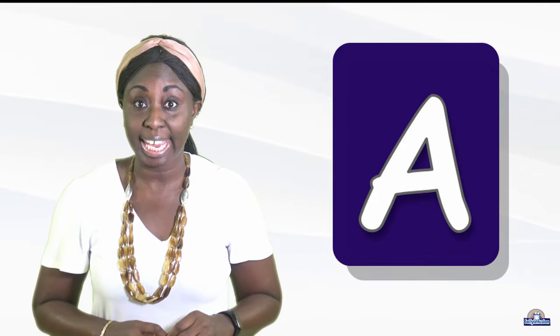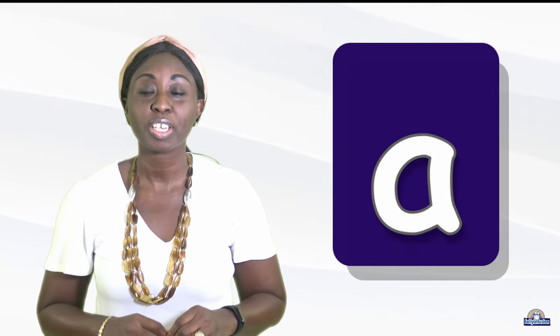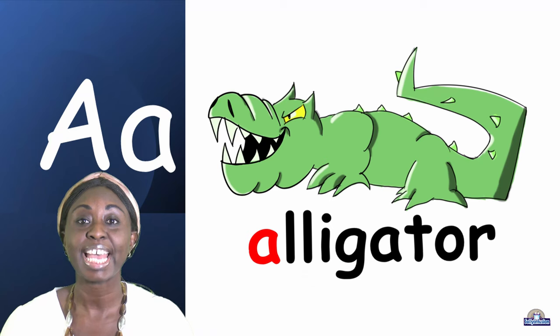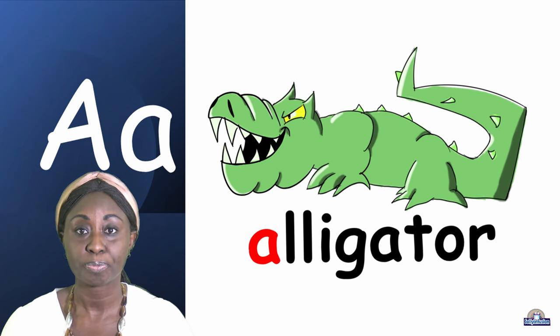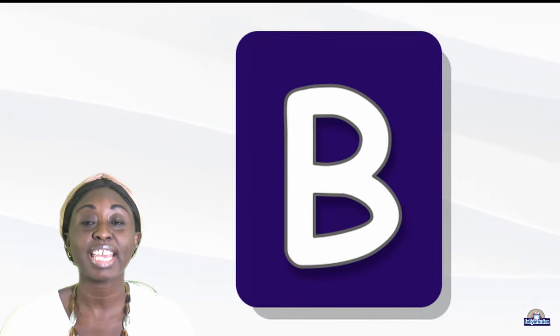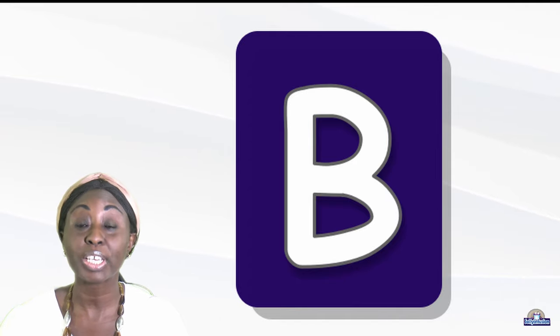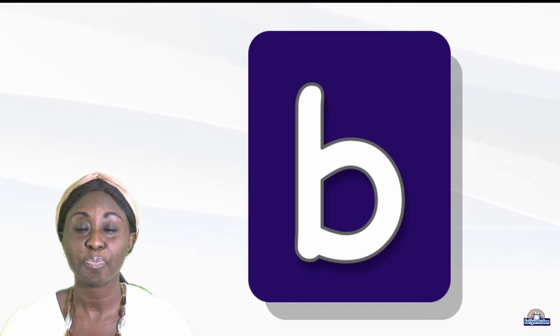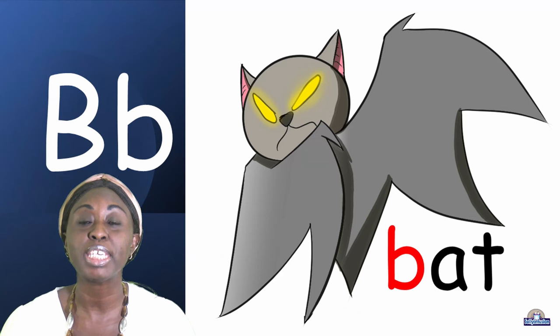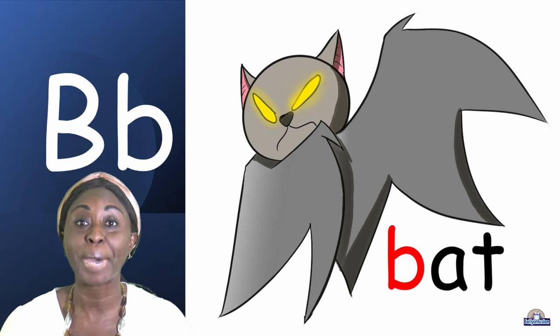Let's go. This is the uppercase A, this is the lowercase A. The sound of A is 'A', as in alligator. This is uppercase B, this is the lowercase B. The sound of B is 'B', as in bat.